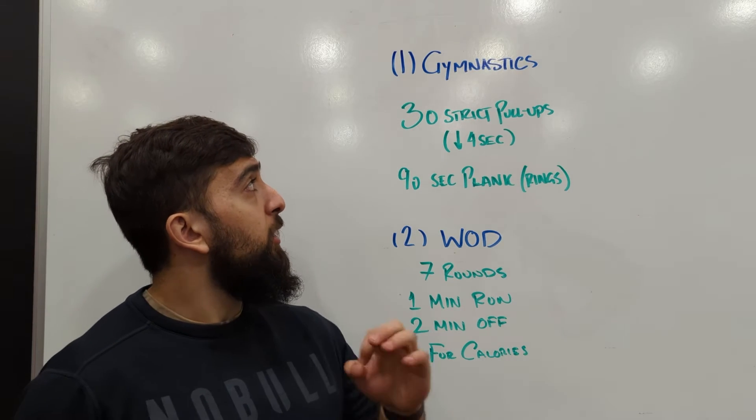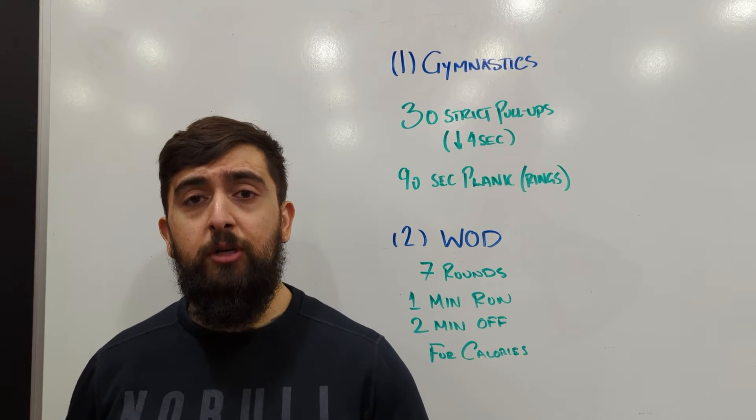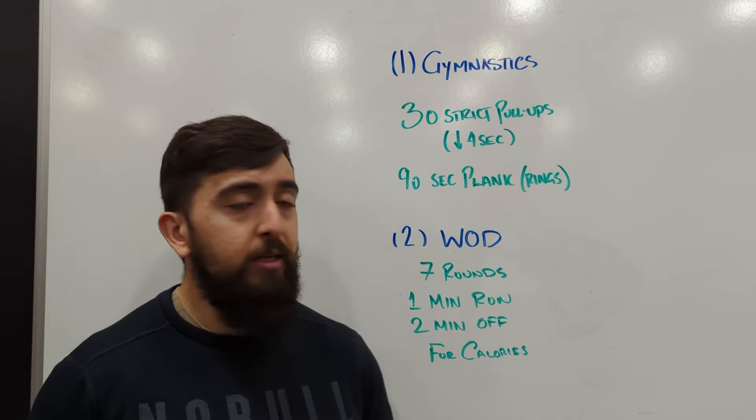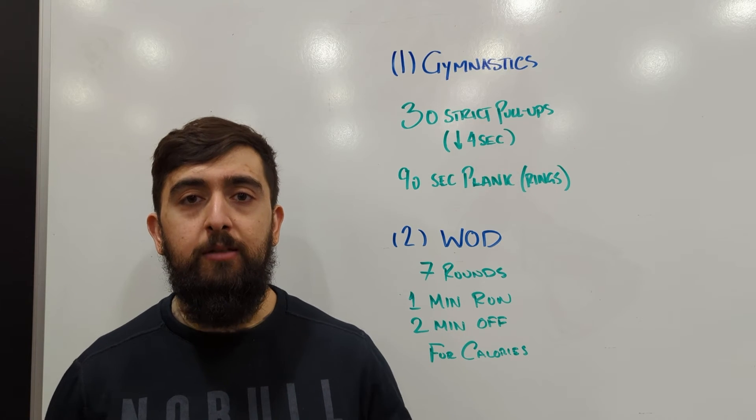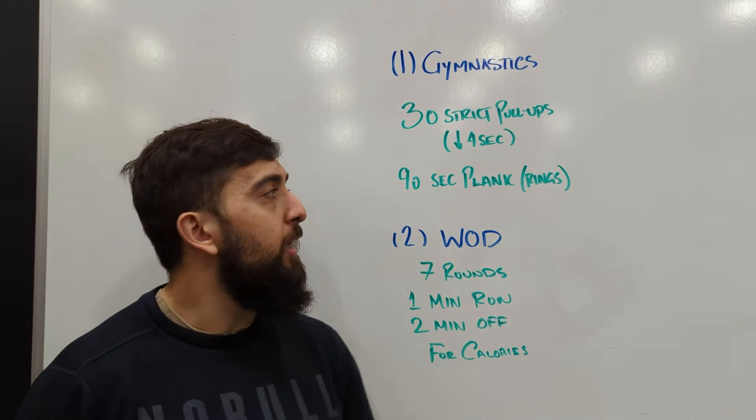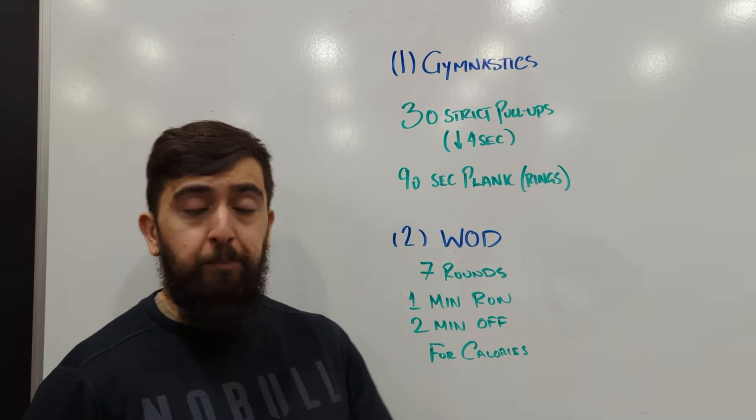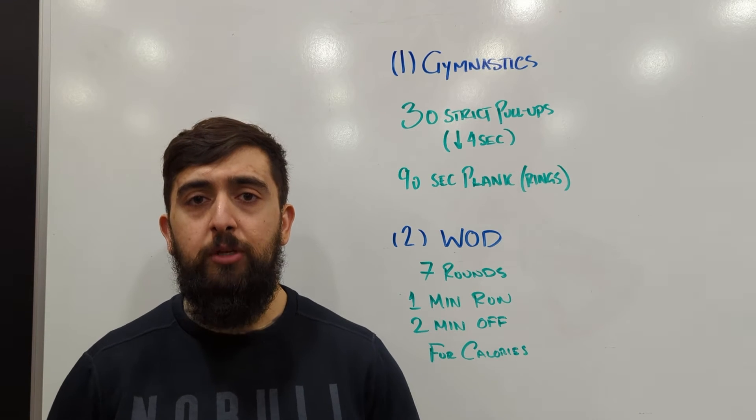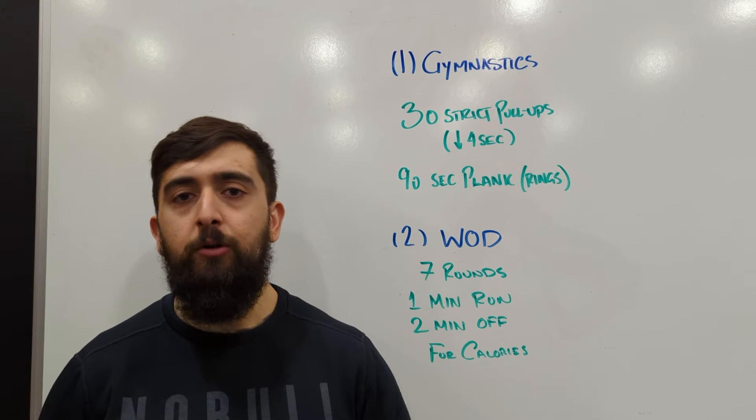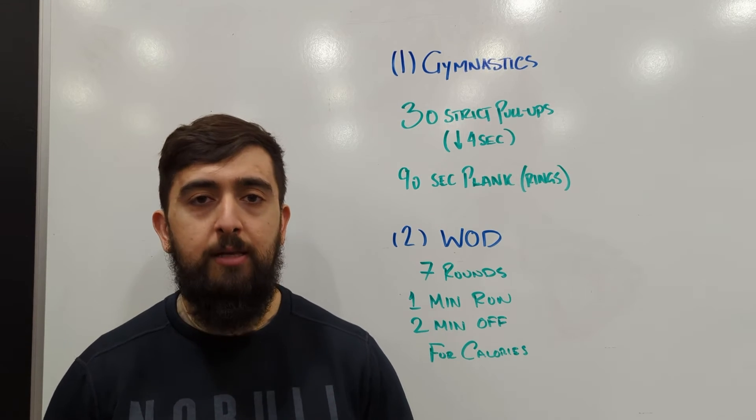So to start off we're going to be working on 30 strict pull-ups and 90 seconds of a plank on the rings and we're going to accumulate these reps and seconds in that plank. So you'll be given 15 minutes to work through these two movements. You can go at any order and break it up into any set that you want.